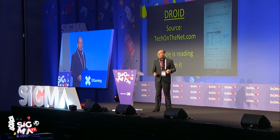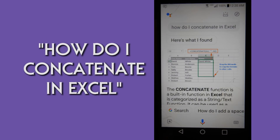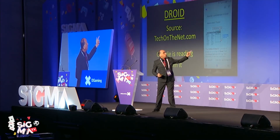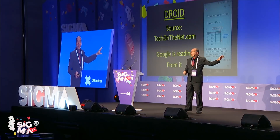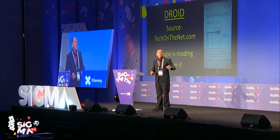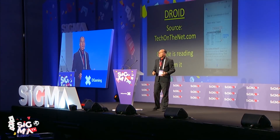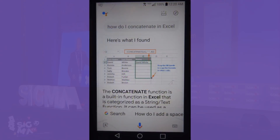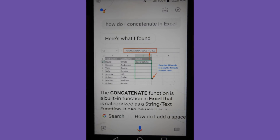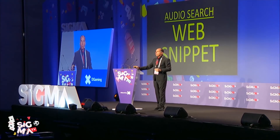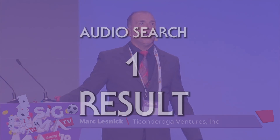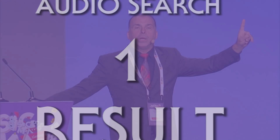I was asking it how to concatenate in Excel. According to Tech on the Net, the concatenate function is a built-in function in Excel categorized as a string text function. It went to Tech on the Net and read what's called a web snippet, giving basically the formula on how to concatenate in Excel. That was a verbal search. What Google grabbed was a web snippet — it spoke that back and provided that page. You would have heard one result. Not ten. One.